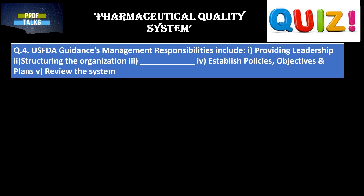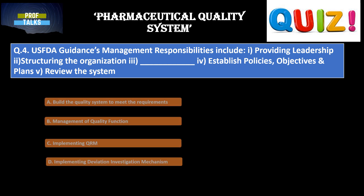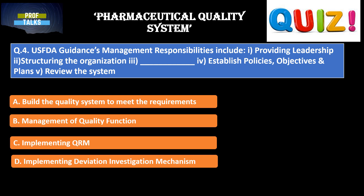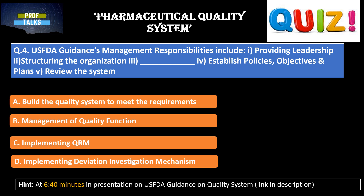Fourth question: USFDA guidance management responsibilities include — first is providing leadership, second is structuring the organization, the fourth option you have to determine, and the fifth is reviewing the system. The fourth option choices are: build the quality system to meet requirements; management of quality function; implementing quality risk management; implementing deviation investigation mechanism. If you are unable to find the answer, you will find it at around 6.40 minutes in the USFDA guidance presentation.